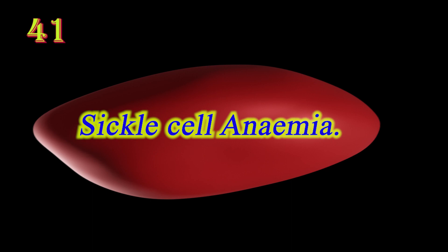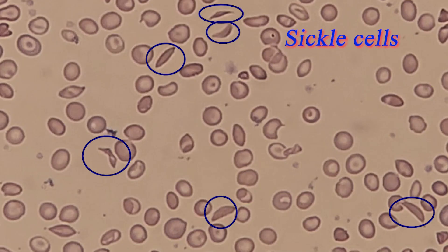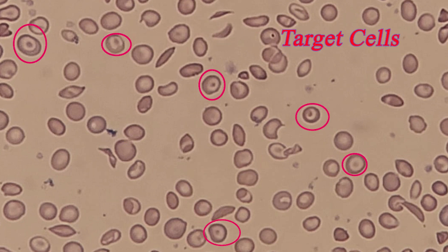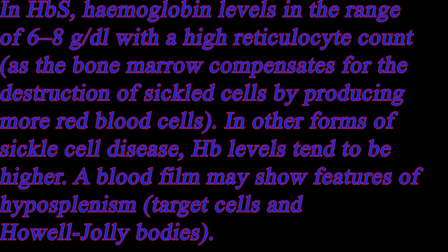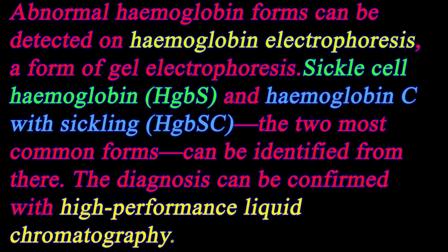Sickle cell anemia: sickle cell disease is a group of blood disorders, typically inherited. Abnormal hemoglobin leads to a rigid sickle shape in response to temperature changes, stress, dehydration, and high altitude. The RBCs break down at a faster rate, dropping hemoglobin level. In sickle cell anemia, hemoglobin S replaces both beta globulin subunits in the hemoglobin.